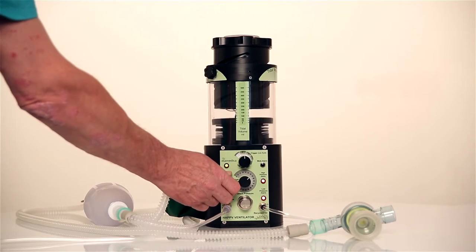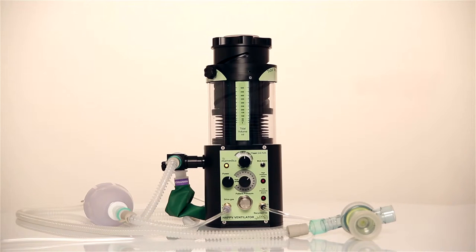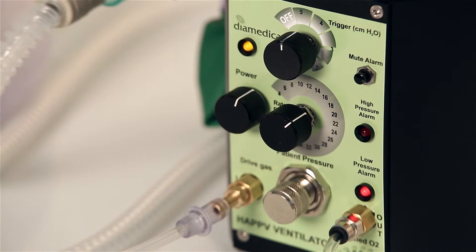When the ventilator is switched on, initially all three lights show and the low pressure alarm remains on until there is pressure in the circuit.